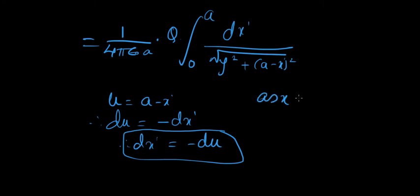So as x goes from 0 to A, u goes from, let's see, let's put 0 for x here, right? So u equals A minus 0, which is A. When x is 0, u is A. And then it goes to, when x becomes A, here, when x becomes A, A minus A, u becomes 0. So it is A to 0.